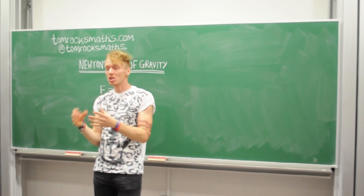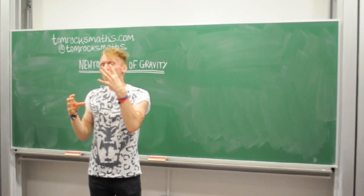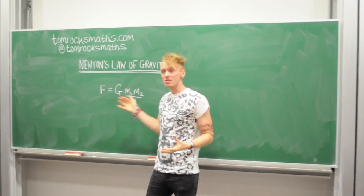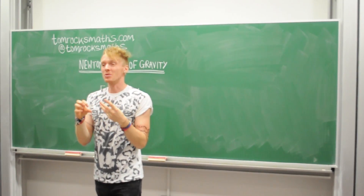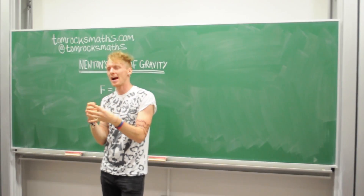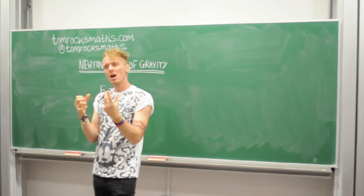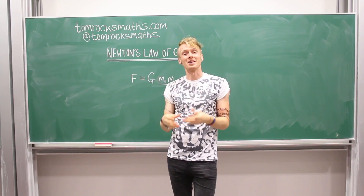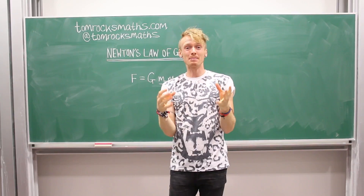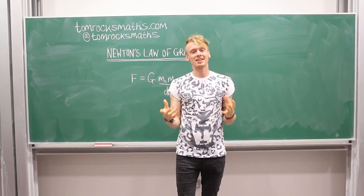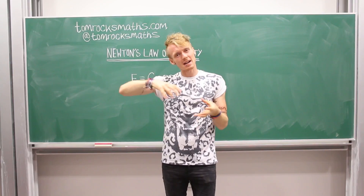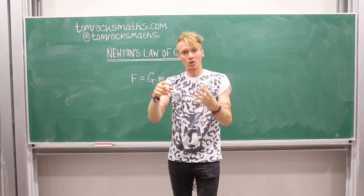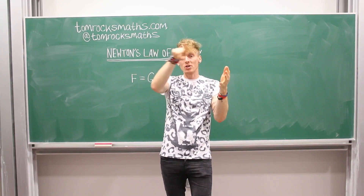Not only did Newton discover gravity, but by writing it down as a simple mathematical equation, he could start to do calculations and work out exactly what the forces were between objects. Knowing the forces, you can then work out how objects will behave. Perhaps the most famous calculation Newton did was to show that the planets in our solar system orbit the sun in elliptical orbits — sort of squashed circles.